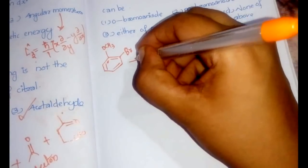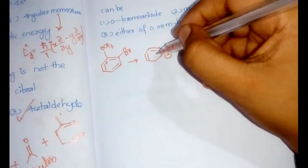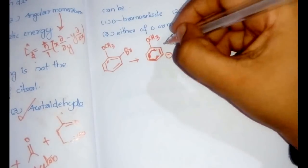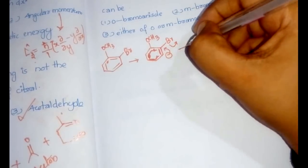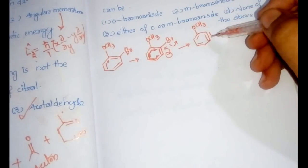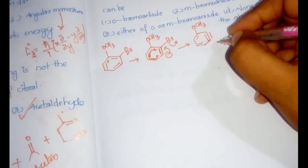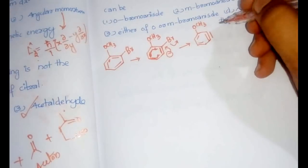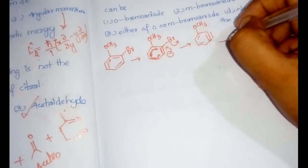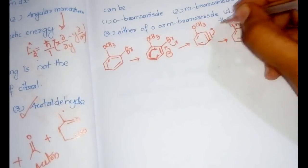In the first step, a hydrogen is abstracted, a carbanion forms, and bromine leaves to generate benzyne. In the next step, the nucleophile NH₂⁻ attacks the meta position relative to OCH₃, because the resulting negative charge can stabilize in the ortho position. The double bond shifts to the ortho position.